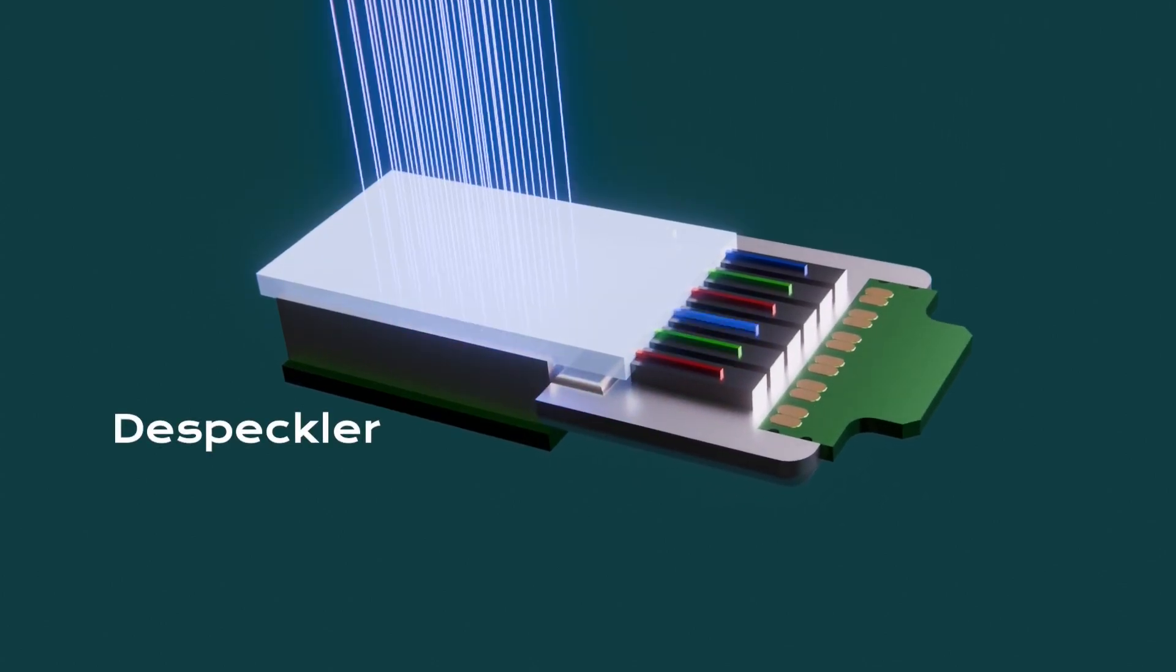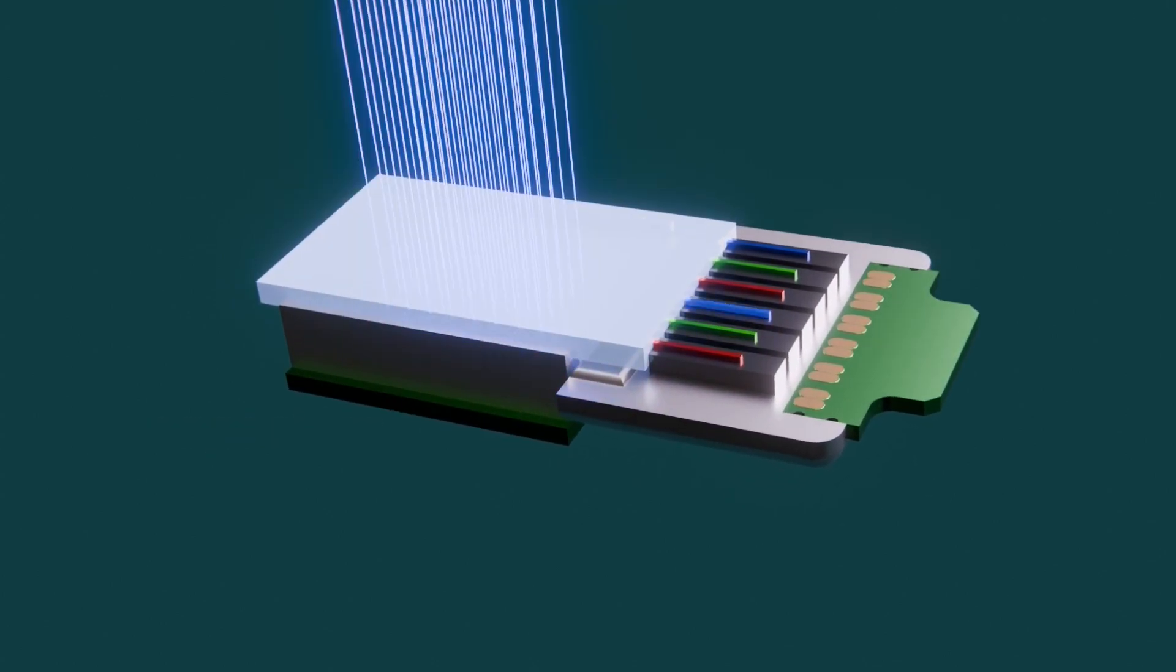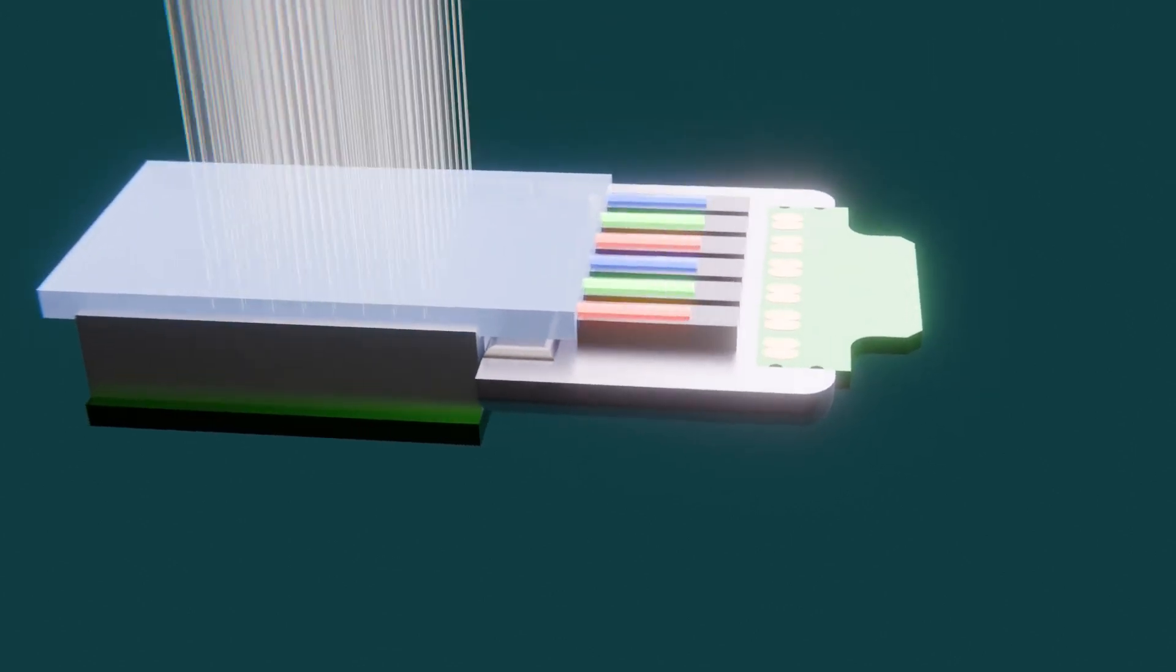Laser beams are reflected at the despeckler on the bottom to reduce coherence artifacts. They propagate back through the chip and form the innovative laser beam array.